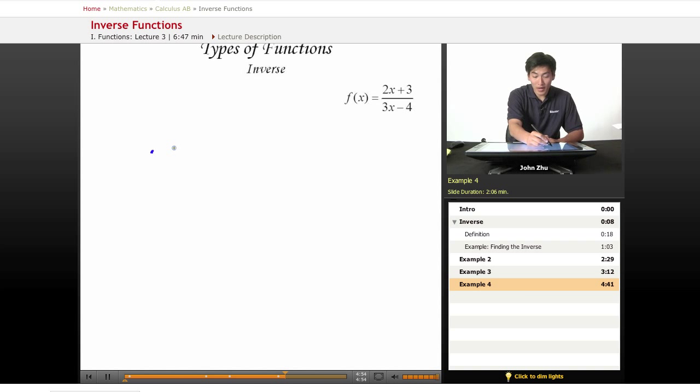So rewriting this as x equals 2y plus 3 over 3y minus 4. Well, to solve for y, we just do a little bit of algebraic manipulation here. Equals 2y plus 3.